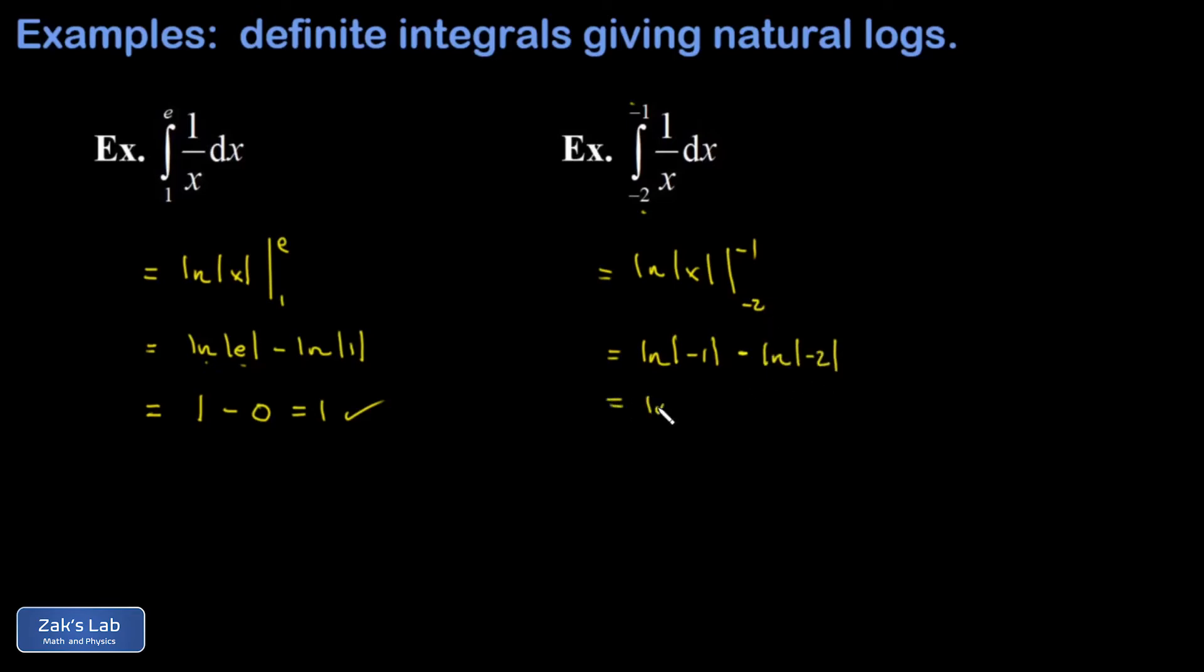This becomes the natural log of one minus the natural log of two. The natural log of one vanishes and I get a final signed area of negative natural log two.